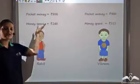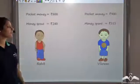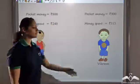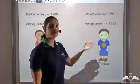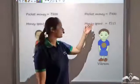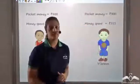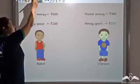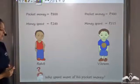Rohit gets pocket money of Rs. 800 per month and spends Rs. 240 out of that. Vikram, on the other hand, gets pocket money of Rs. 900 and spends Rs. 315 from it. So now can you tell me who spends more of his pocket money?